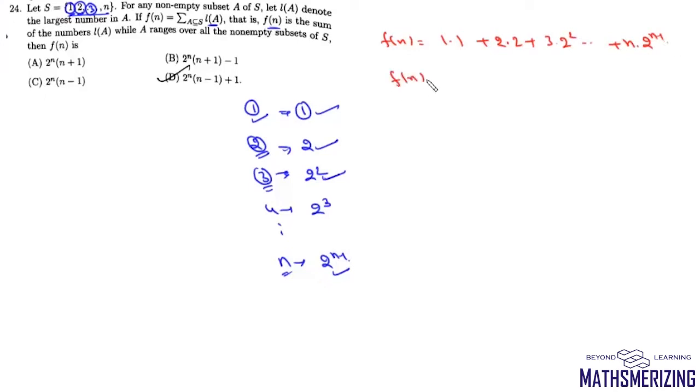Now what we'll also do is write this F(N) after displacing one term. So it is 1×1 + 2×2 + ... + (N-1)×2^(N-2) + N×2^(N-1). Now we'll also multiply it by 2.